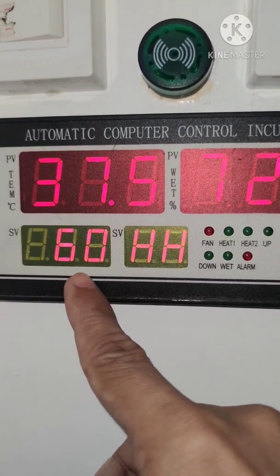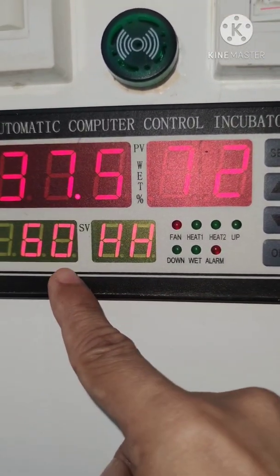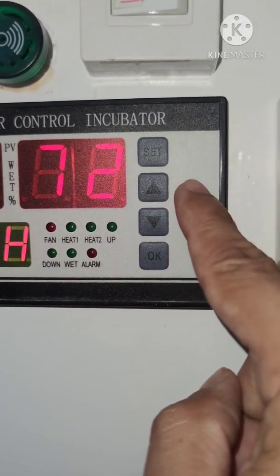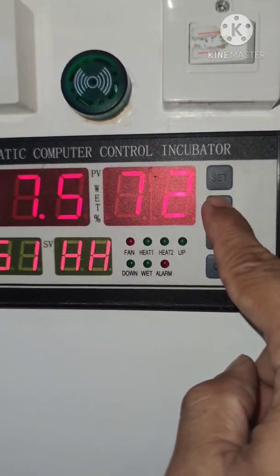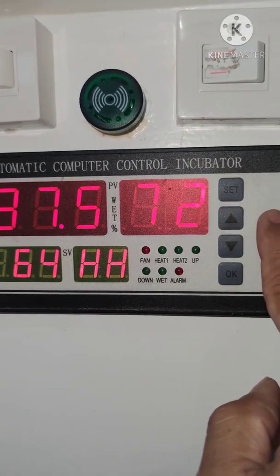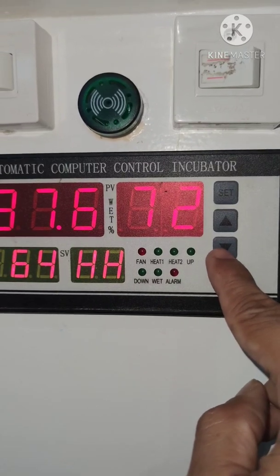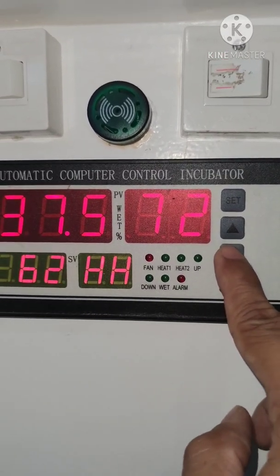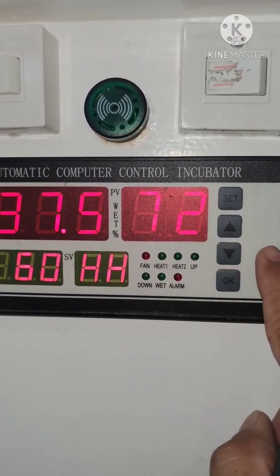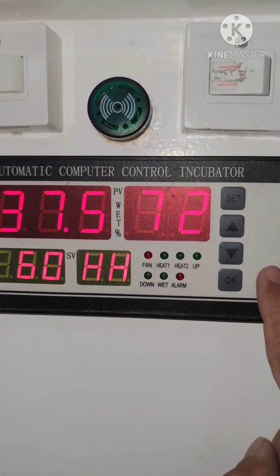So you can start changing this value. So if you want to increase it, you press the up button. Or if you want to decrease it, you need to press the down button. So you can now set it according to your desired number for your humidity.